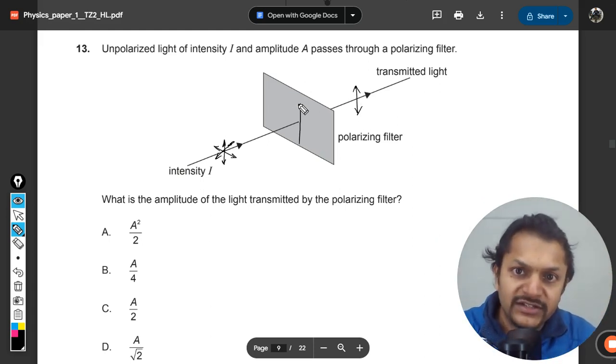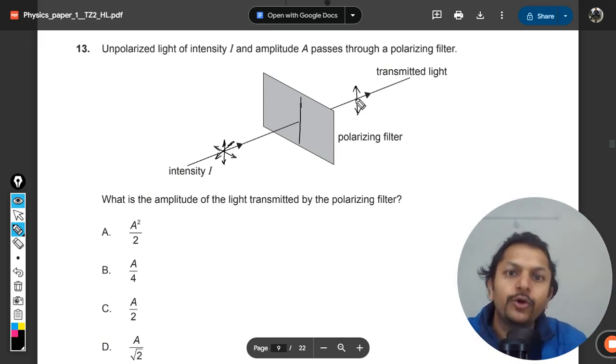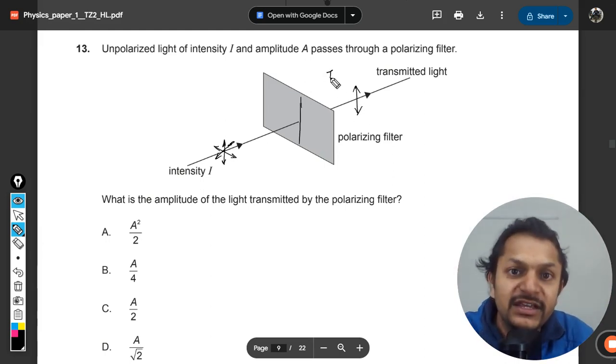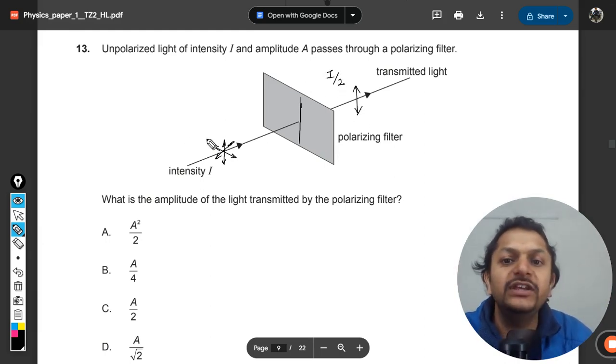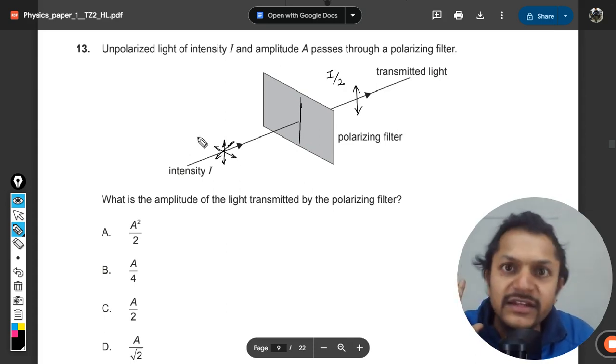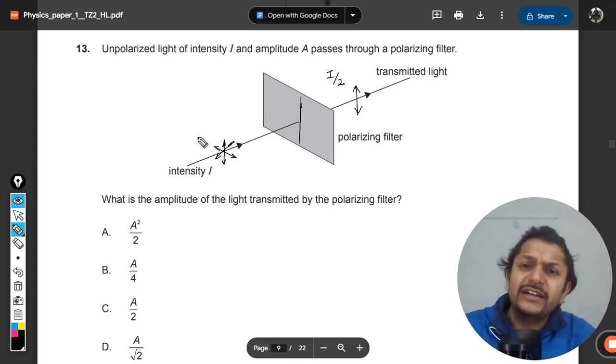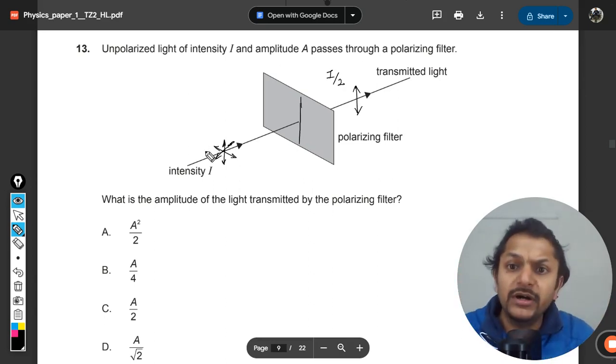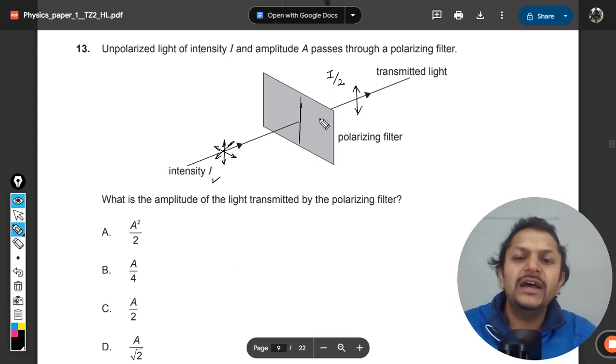This polarized light has an intensity which is half of the unpolarized intensity. As a matter of fact, this is just kind of formula that you can remember. If this is an unpolarized light with intensity I and it is polarized, the intensity divides by two, so intensity becomes I by 2.